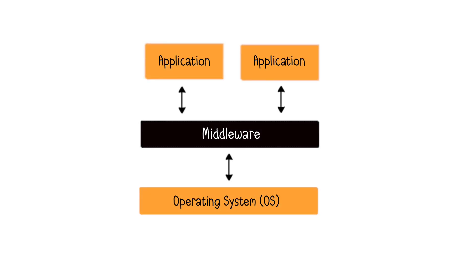Middleware is a technical layer between the OS, or operating system, and the application layer. Concretely, Middleware is also software that runs on an operating system. We place it below an application because its role is to help other software or applications interact with each other.